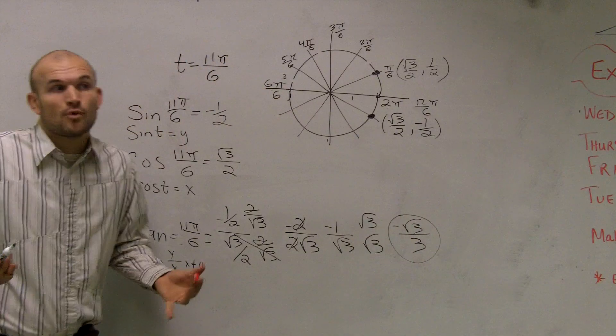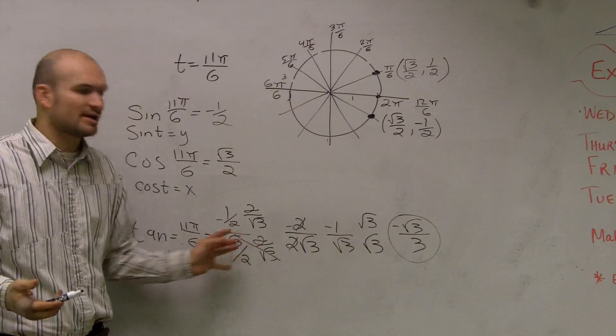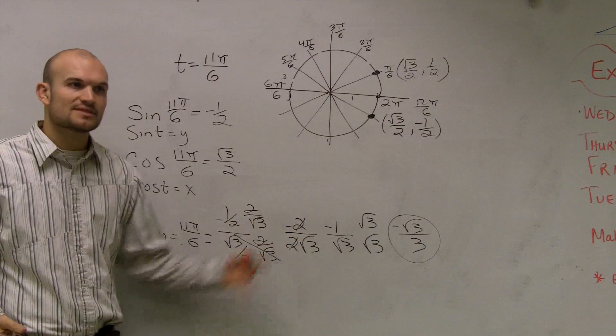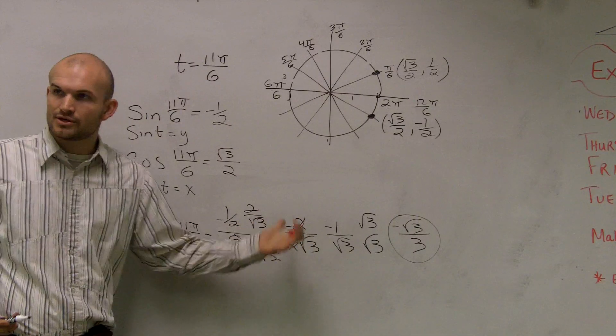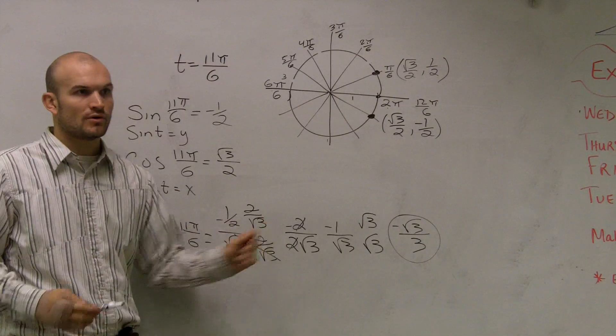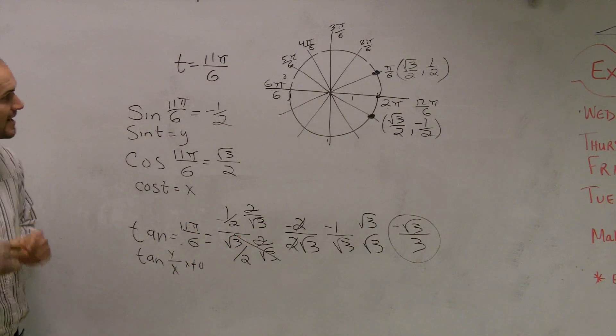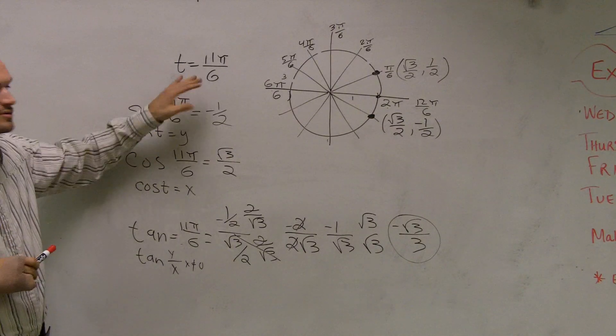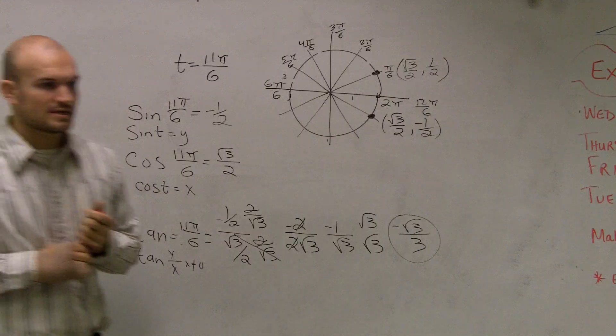So this is a lot of work. But guess what? The more and more you do of this, the more you can start seeing it and skipping these steps. You'll know exactly what it's going to look like. But for right now, you're really going to have to practice going through all the steps. That's how you evaluate the trigonometric functions when given at point t, 11π over 6.